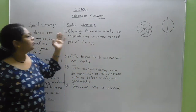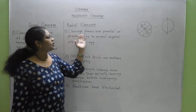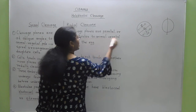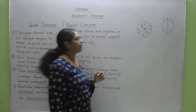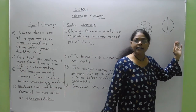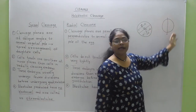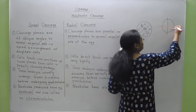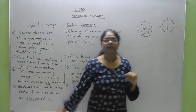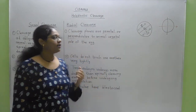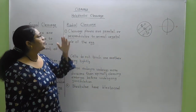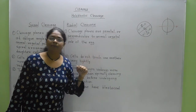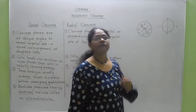In radial cleavage, the cleavage planes are either parallel or perpendicular to the animal-vegetal pole axis of the egg. In the radially cleaving embryo, the cleavage axes are either parallel or perpendicular — referred to as meridional or equatorial.